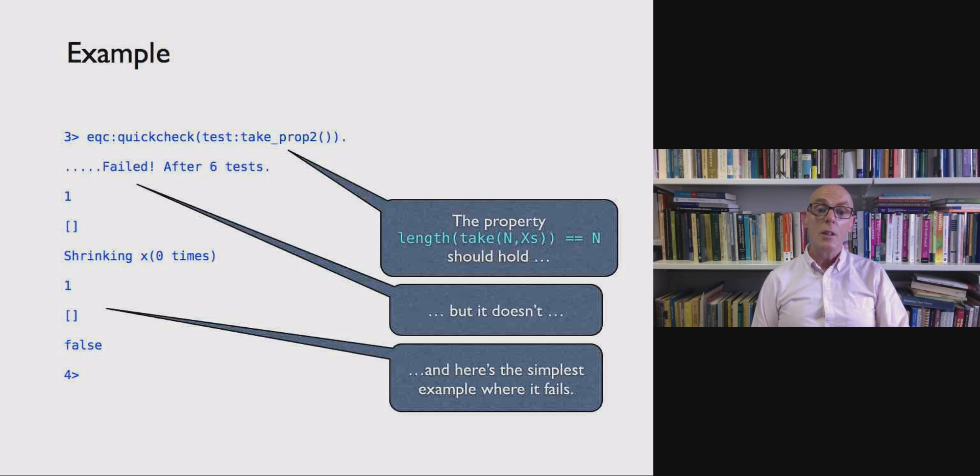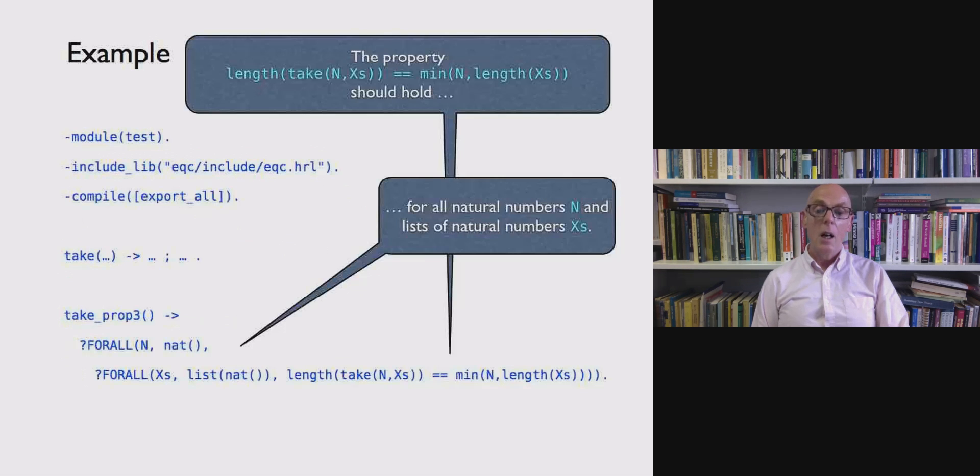And that's because we didn't get the property right. It's not always easy to write properties. Let's have a think about what we should be saying. Why don't we try this? This says something rather more subtle. It says that the length of take N X's is the minimum of the length of X's because we can't take any more elements than there are in X's and N. So it's not always N. If we have an empty list the length of take N empty list will be 0 whatever the value of N. So there's our property.